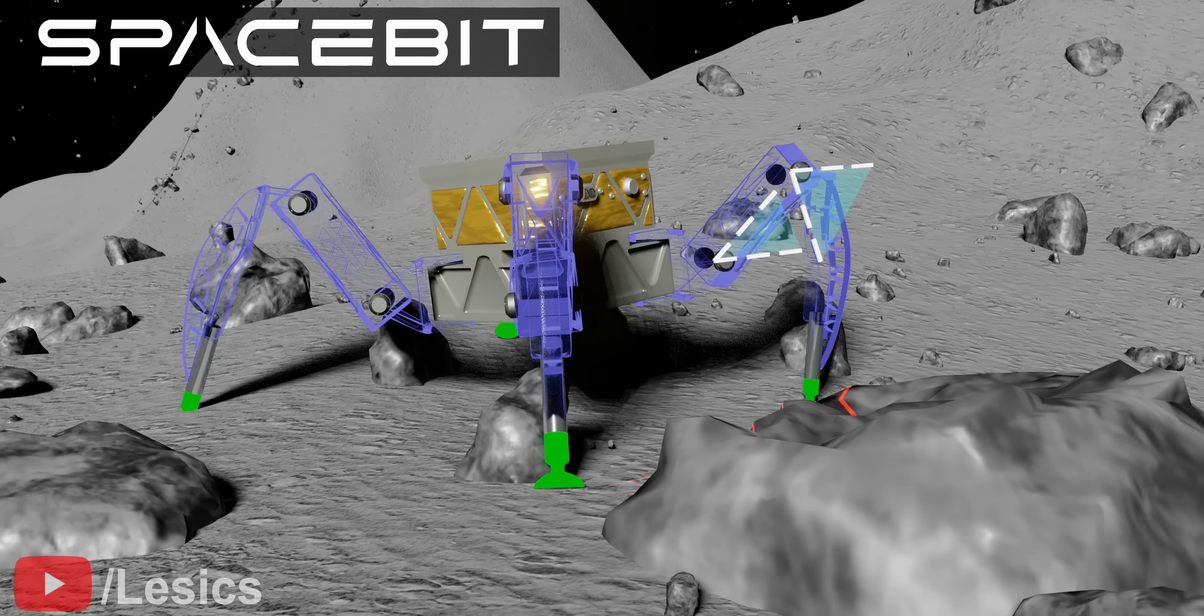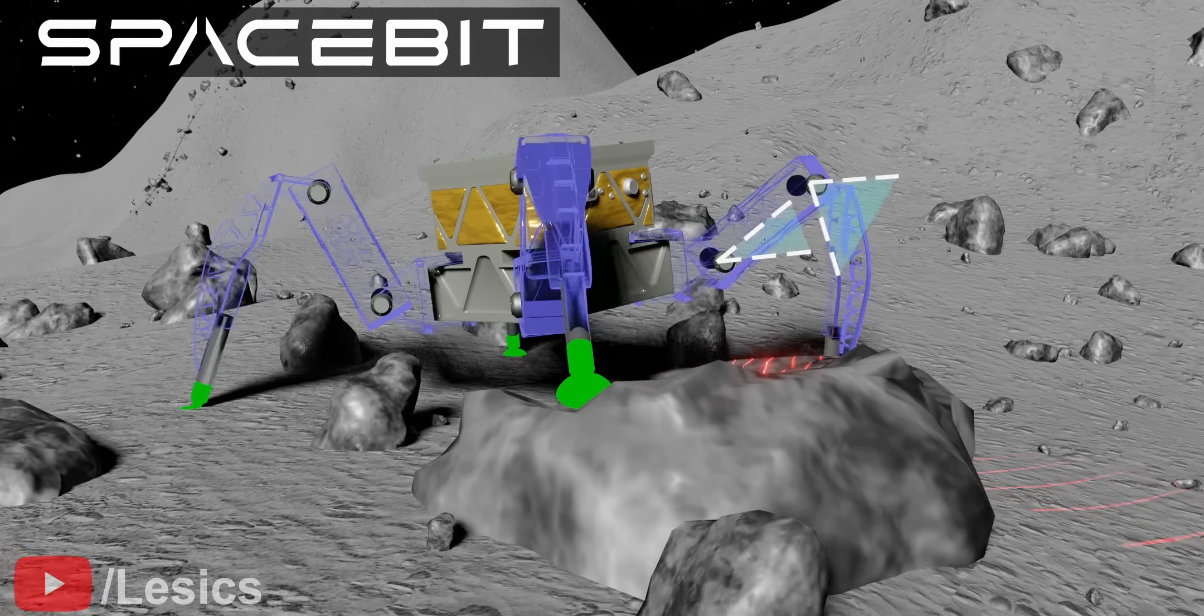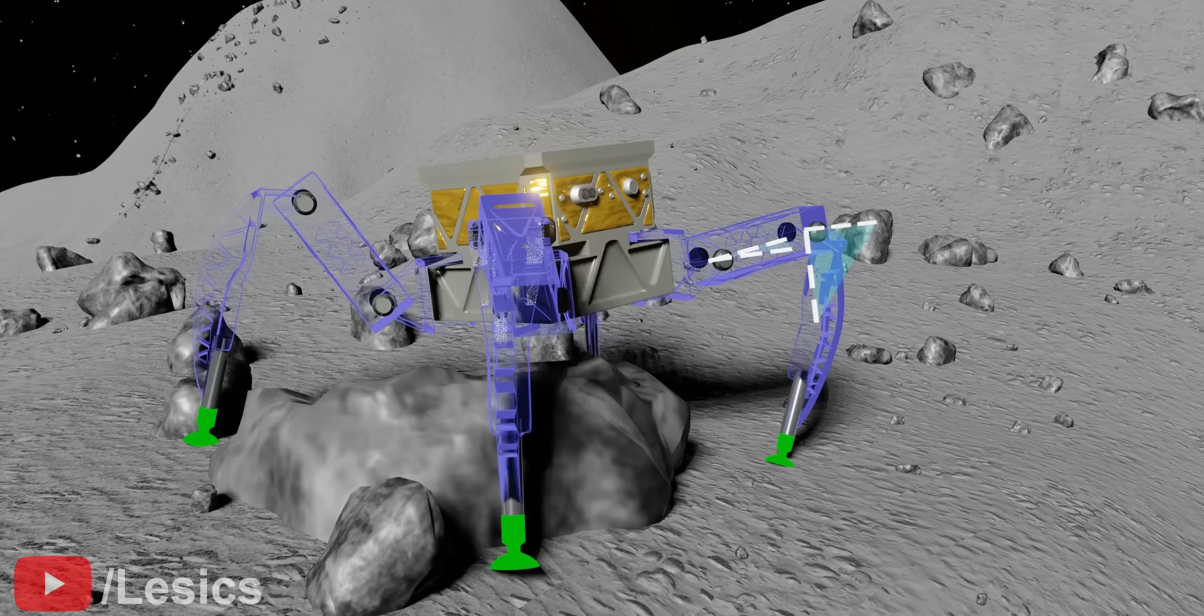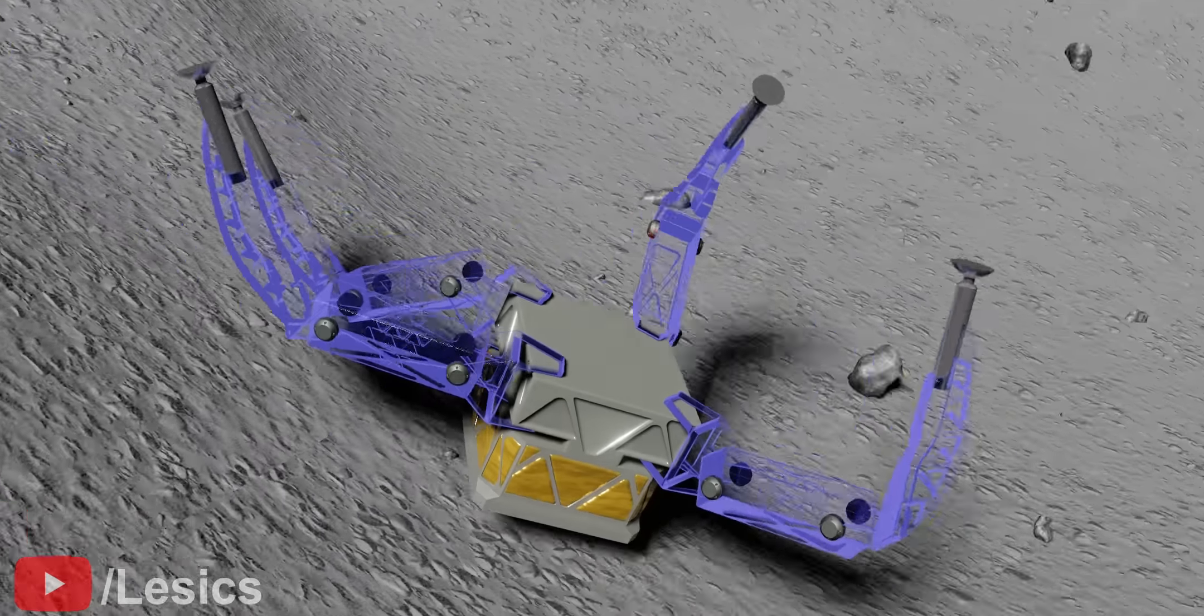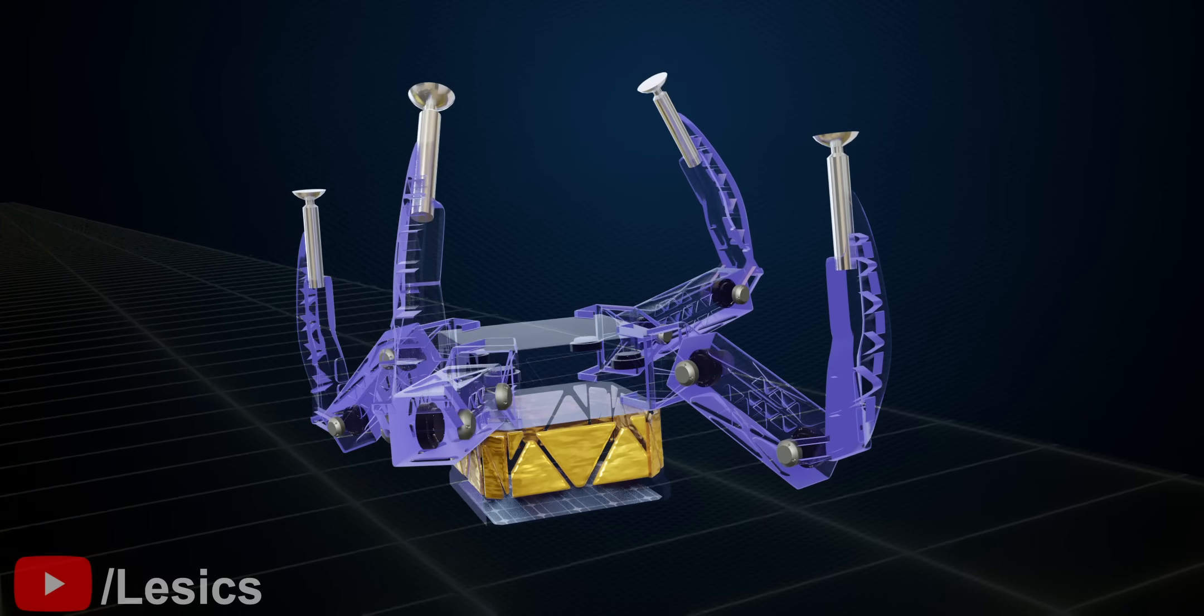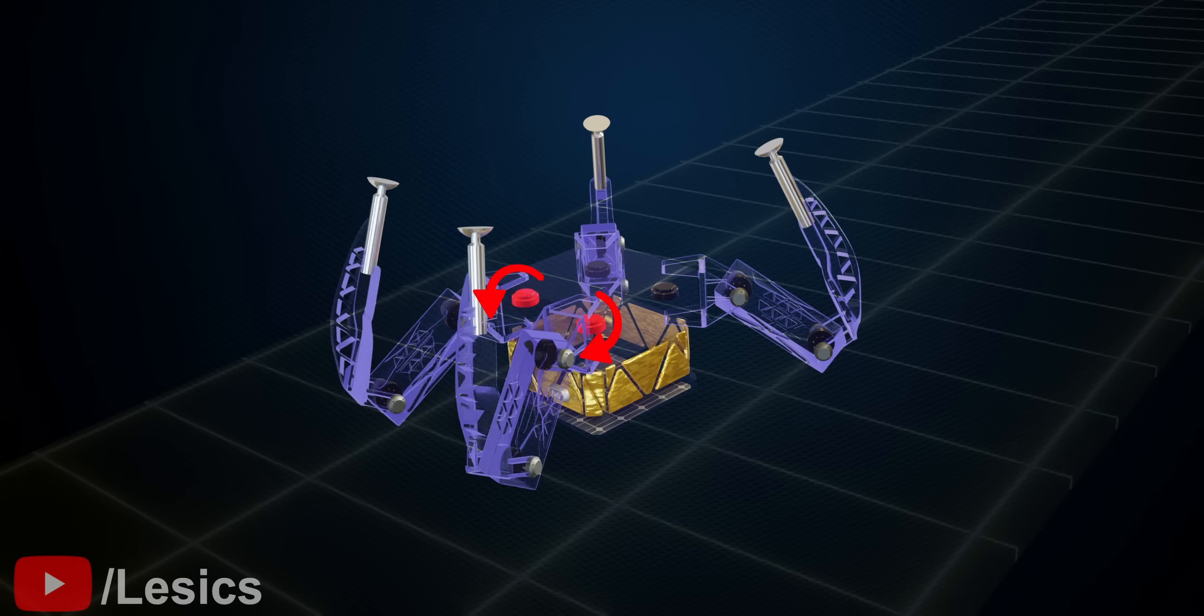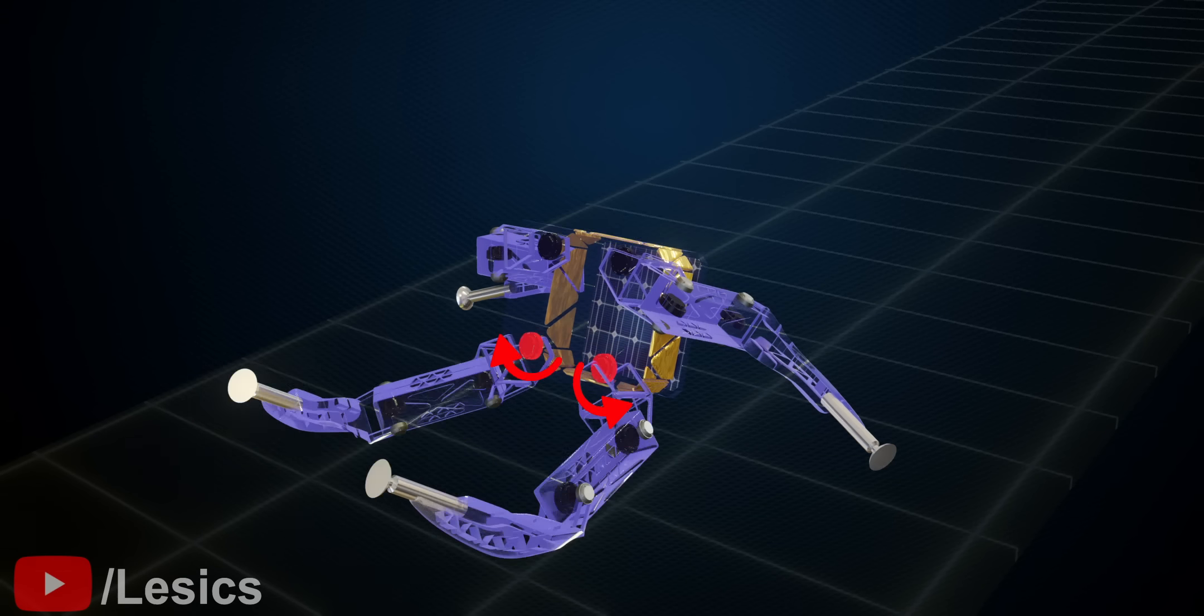Spacebit designed this rover to explore lunar lava tubes on the Moon. Since there will be no human presence, the rover must also be able to recover if it somehow flips back on its head. Here you can see the motion of the rover, as well as the rotation and direction of the motors used to get the rover back on its feet.